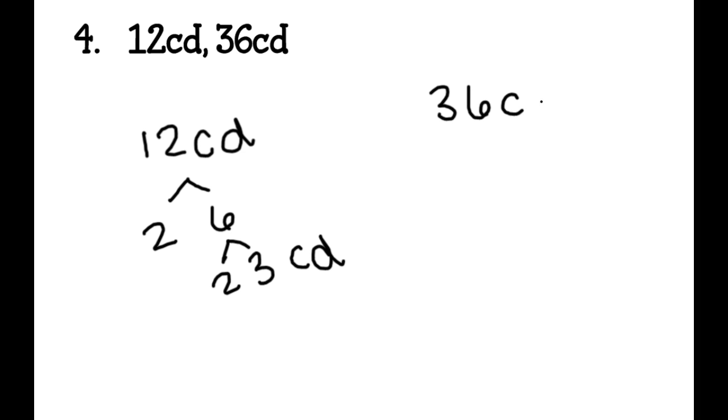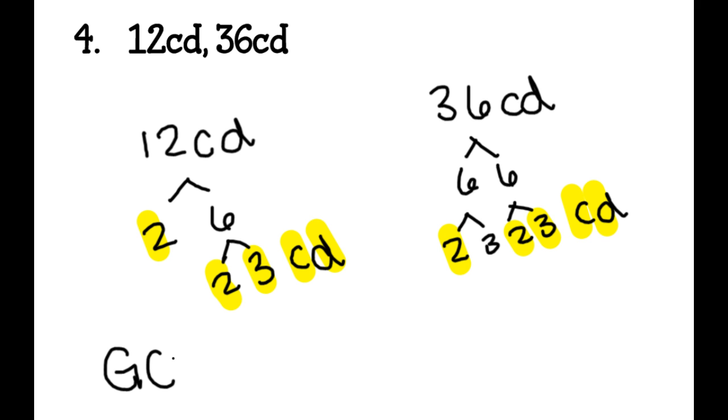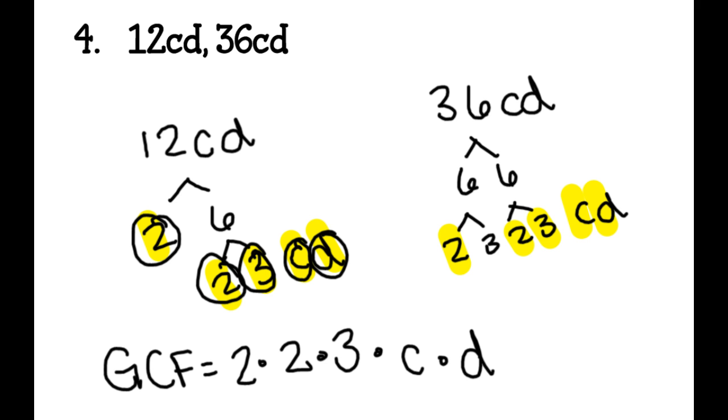And then I have 36cd. That would become six and six. And that would become two, three, two, three. And then cd. Then I'm going to highlight. I have a d in common, a c in common, a three matches up, a two matches up, and another two matches up. So this is a lot to multiply together to get our GCF. So our GCF is going to be two, I'm getting that from this two, times two, getting that here, times three, times c, times d. And as you can see, they all have a highlighted partner. So for the GCF, I take two times two, which is four, times three. So my GCF is 12cd.